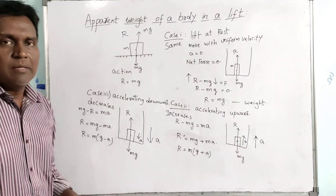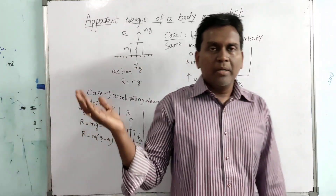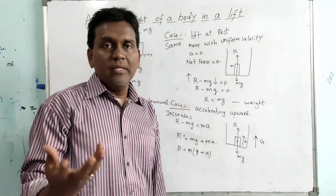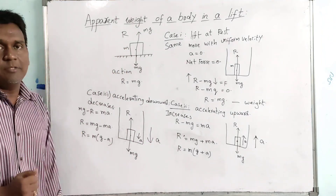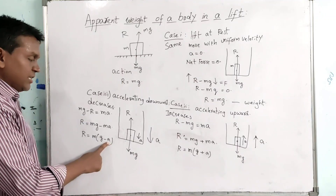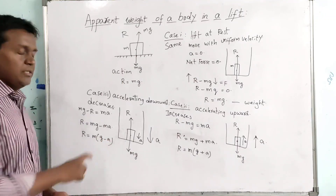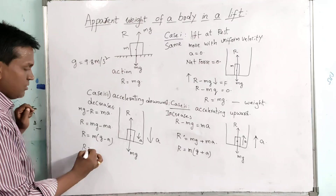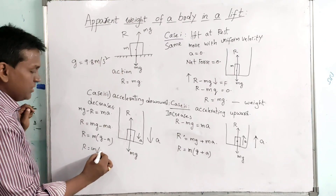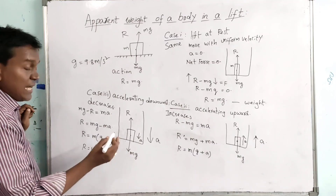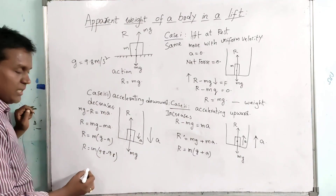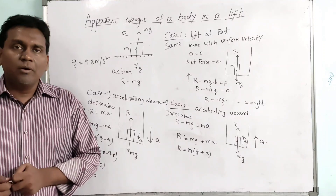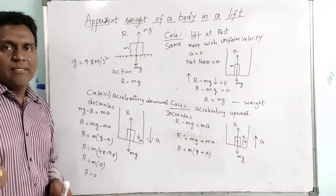In situations like bungee jumping, where a person jumps from heights, they experience weightlessness. As the person is jumping, their acceleration equals g, which is 9.8 m/s². The reaction force R equals m(g - a) equals m(9.8 - 9.8) equals m times 0. So the reaction force becomes zero. As the reaction force is zero, the person feels weightlessness.